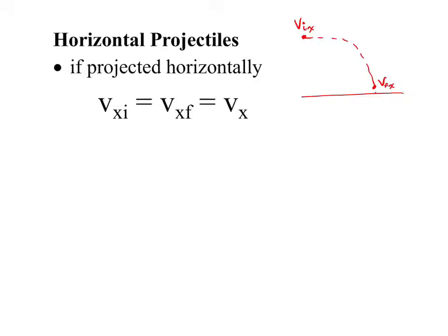In the Y direction, we know that our initial Y velocity is zero in horizontal projectiles. Why is it zero? Because if you look at this very first point — if you're projecting it horizontally — initially it's not even moving up or down; it's just moving horizontally in the beginning. And then of course our final velocity in the Y direction is definitely not zero. We're always looking at the point just before it hits the ground.